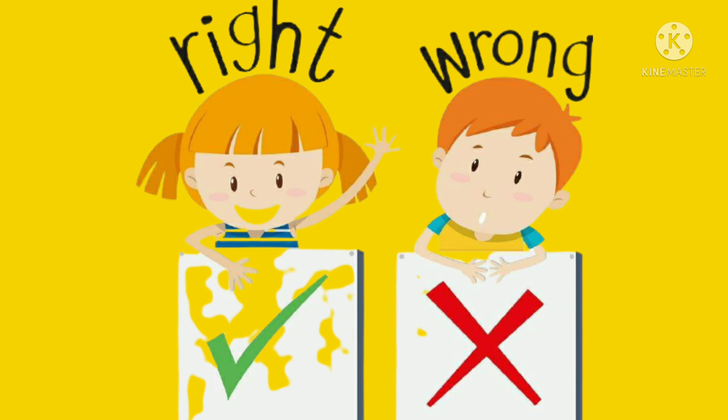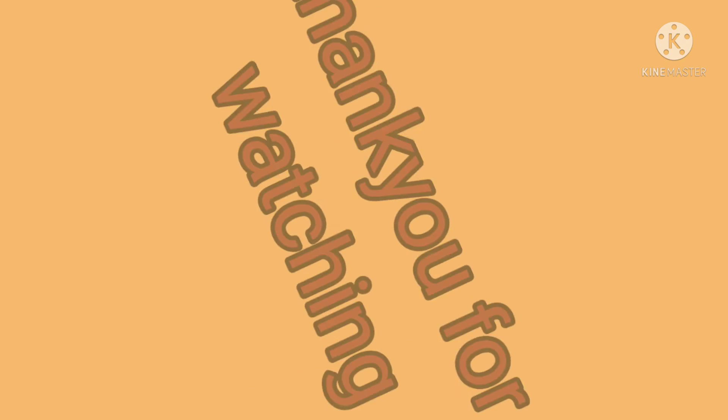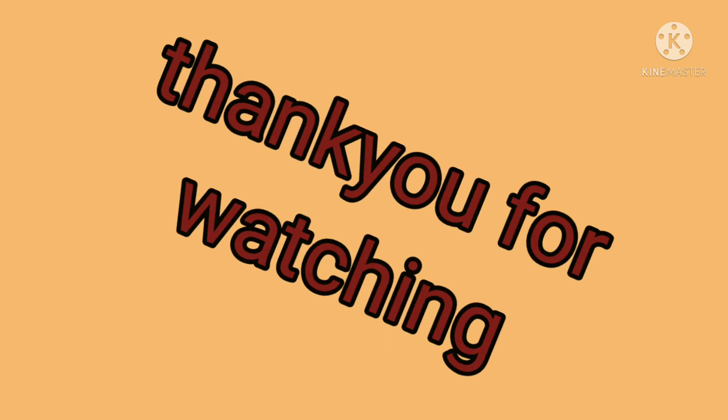Right means sahi. W-R-O-N-G: Wrong. Wrong means galat. Thank you for watching. Please like and subscribe.